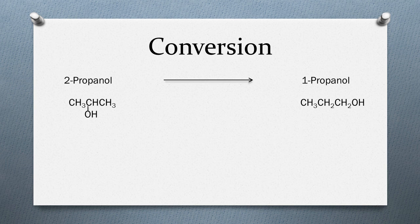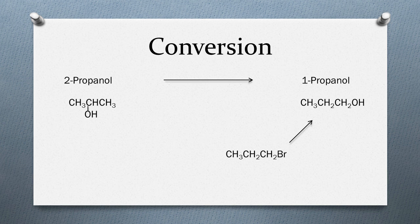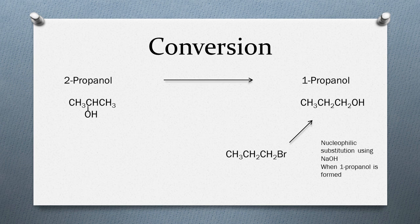Let's see how we can proceed. The first thing we are going to do is convert 1-bromopropane to 1-propanol. This is performed using sodium hydroxide — the Br is replaced by OH. This reaction is the nucleophilic substitution reaction.